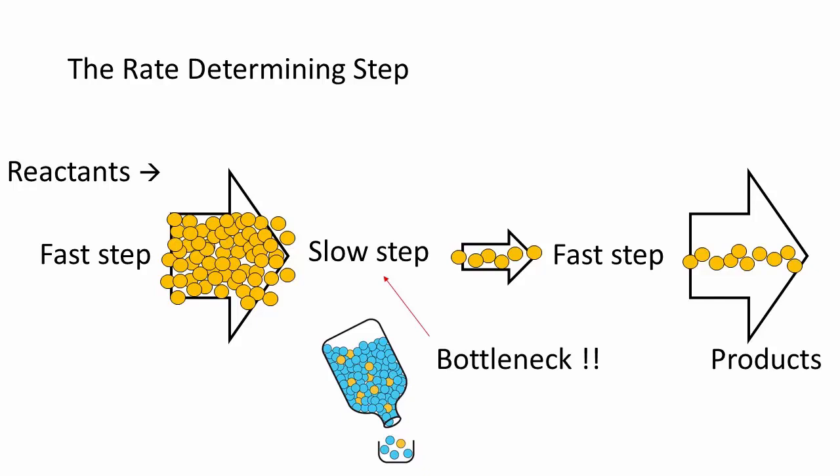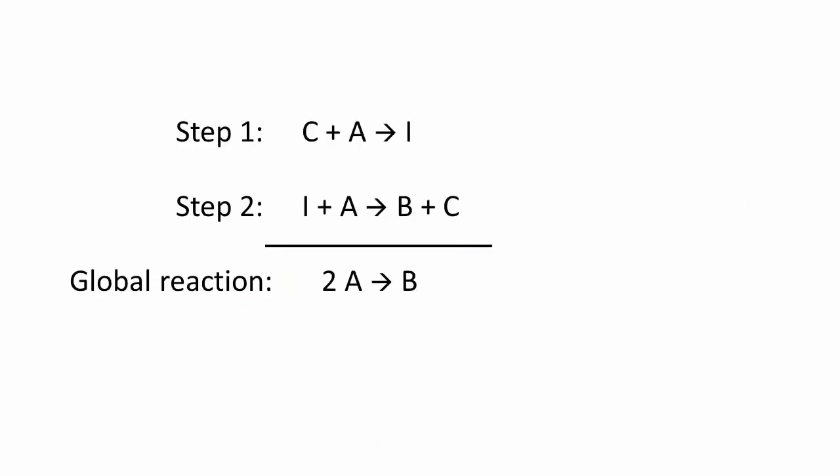Finally, a reaction mechanism might introduce species not seen in the balanced chemical equation. These are either intermediates or catalysts. An intermediate is a chemical species temporarily produced by one step, and subsequently consumed in a following step, thus removing it from the final balanced equation.